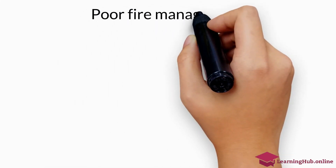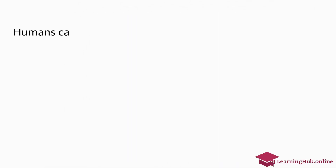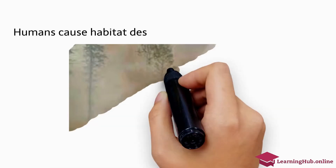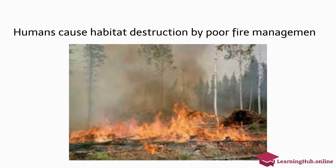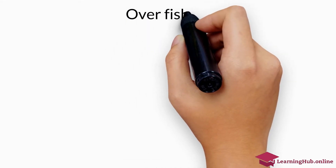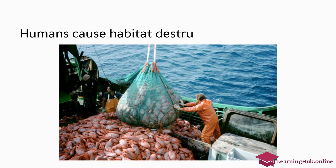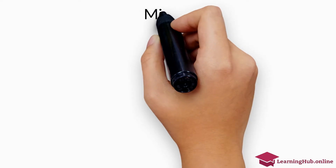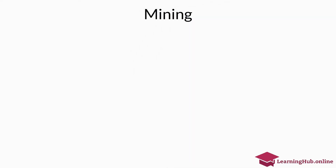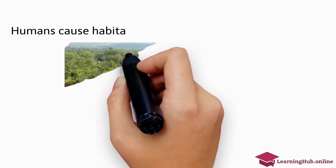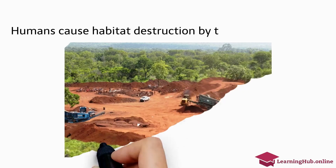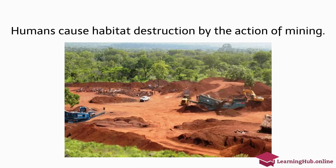Poor Fire Management. Humans cause habitat destruction by poor fire management. Overfishing. Humans cause habitat destruction by overfishing. Mining. Humans cause habitat destruction by the action of mining.